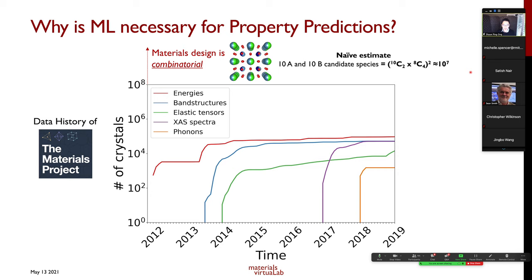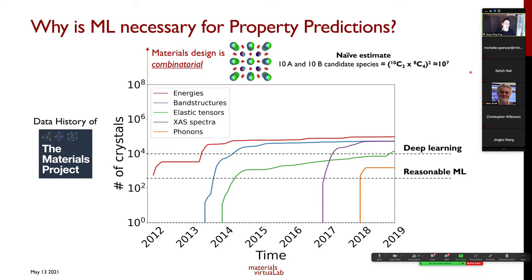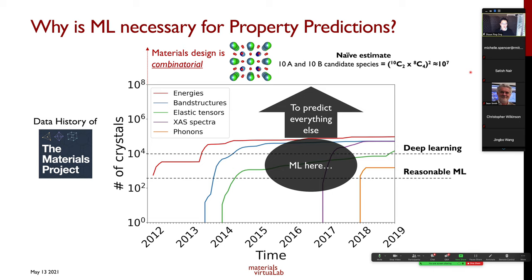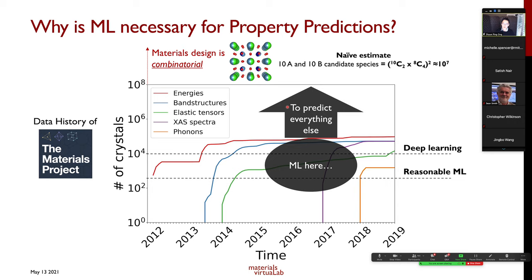The good news is that with recent developments, we've crossed the threshold of having enough data to do reasonable machine learning. With on the order of a few hundred to a thousand data points you can build reasonable ML models; once you cross about 10,000 data points you enter deep learning territory with sophisticated models. The general idea is to machine-learn from existing data to predict everything else we haven't computed, or at least get a good guess before running DFT calculations.